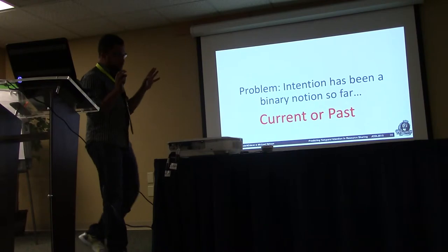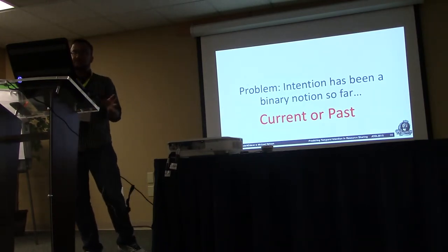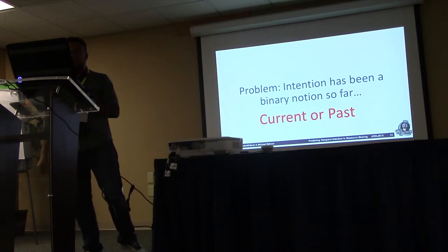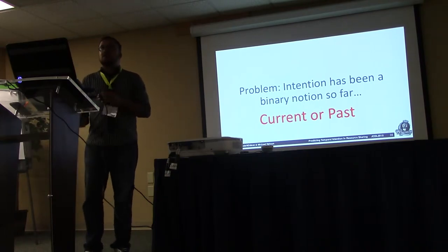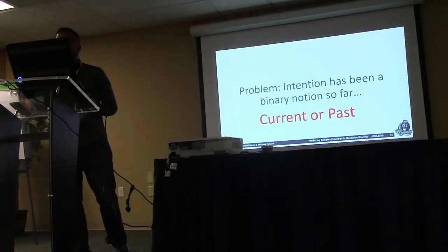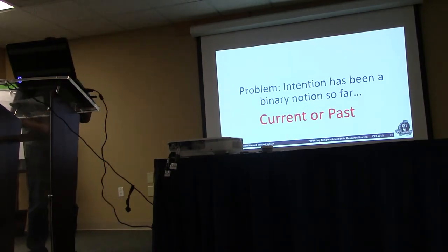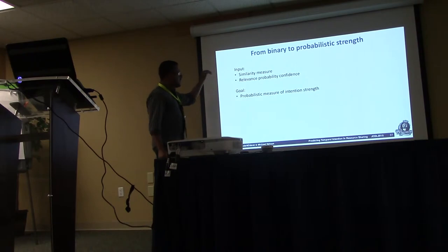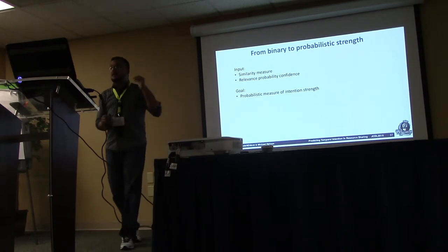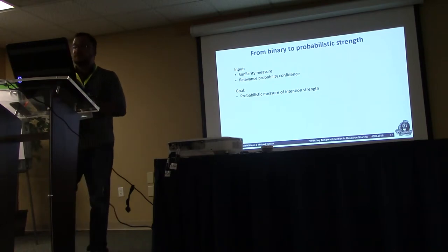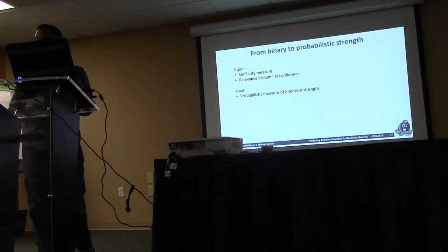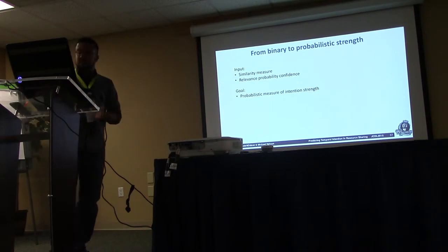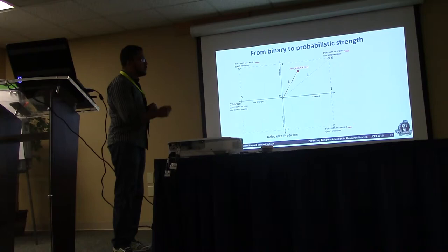So far I can train a model very well to detect if it's relevant or non-relevant, get the similarity, and determine if it's a current or past intention — but so far it's been binary: current or past. How current is it? How past is it? Can I get a middle ground? We needed something not black and white. We have a similarity measure and a relevancy confidence from the classifier. Our goal is to find the strength of intention with respect to those two measures, varying from negative one to one.